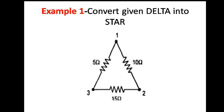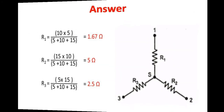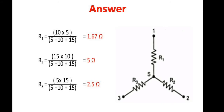The first problem is to convert the given circuit to star connection. From the circuit we can see that all three resistances are connected in delta fashion. We consider Rab = 5 ohm, Rbc = 10 ohm, and Rca = 15 ohm. Using these values in the formula we can get Ra, Rb, and Rc — also named R1, R2, and R3. R1 is obtained by multiplying 10 and 5 and dividing by the sum of all resistances, giving 1.67 ohm.